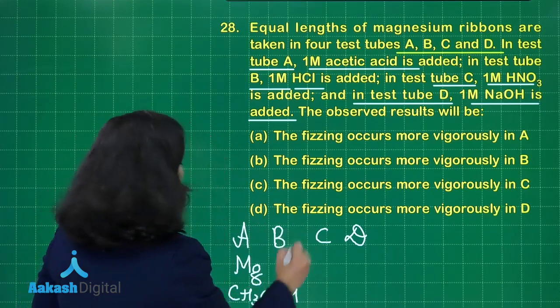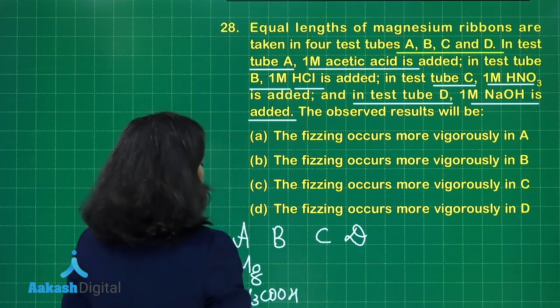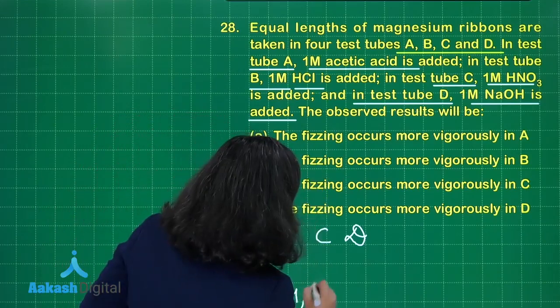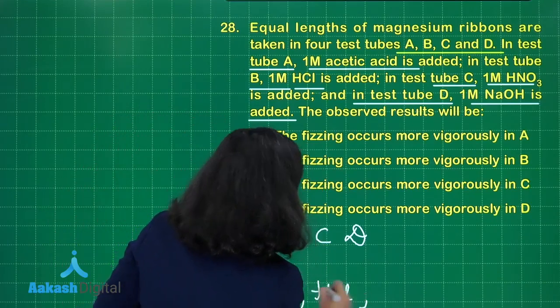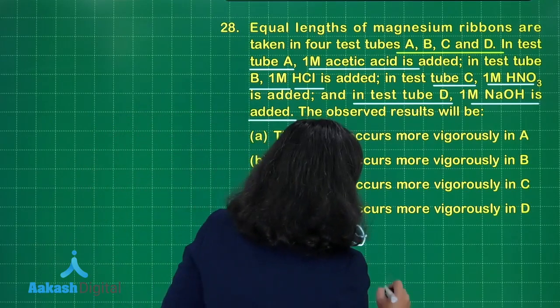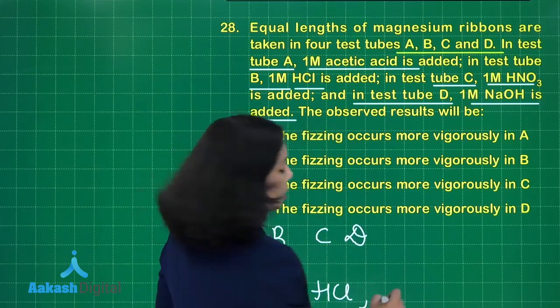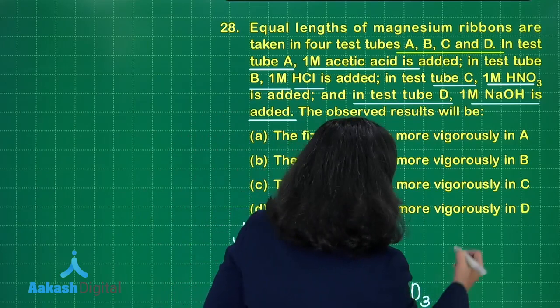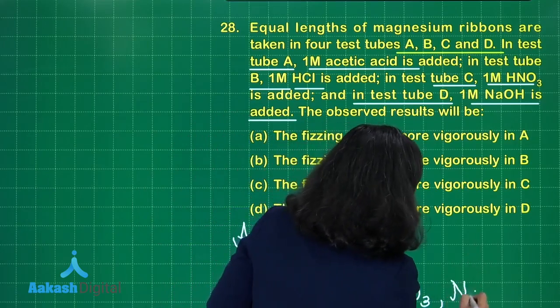Same way, here also magnesium is there, and that magnesium is going to react with the second thing, that is HCl. In test tube C there is 1M HNO3, and in the fourth test tube there is 1M NaOH.